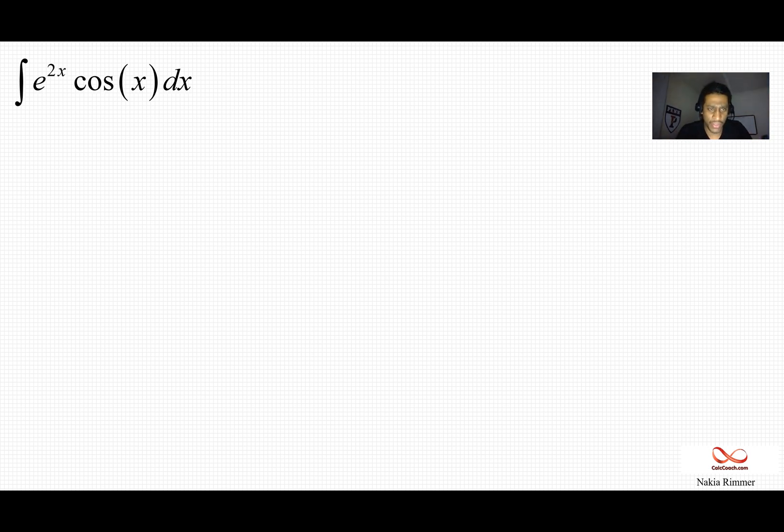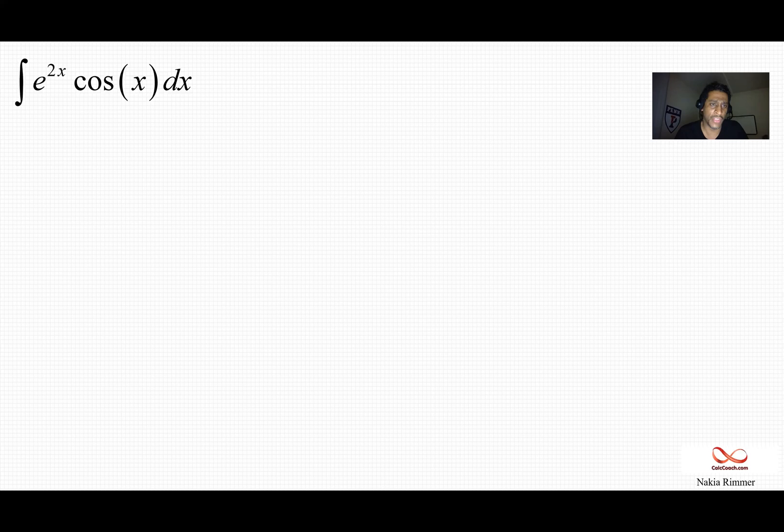You see, when we do integration by parts the first time, we're gonna have this change from an integral that you see here to an integral with cosine in it. And then when we do it a second time, we'll trade back in for another integral that has cosine in it.